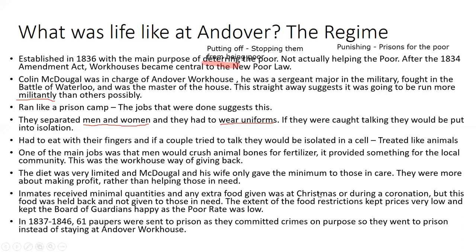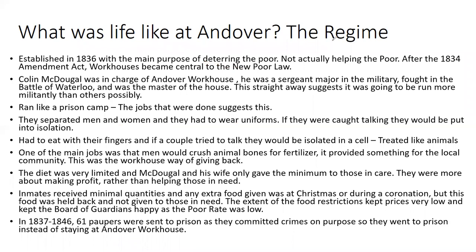Between 1837 and 1846, 61 paupers were actually sent to prison having committed crimes so bad that they preferred prison over staying at the workhouse. That suggests life in a prison was seen as more appealing than Andover workhouse, which tells you the scale of problems going on there. That's what life was actually like, and that's what you need to have an understanding of.